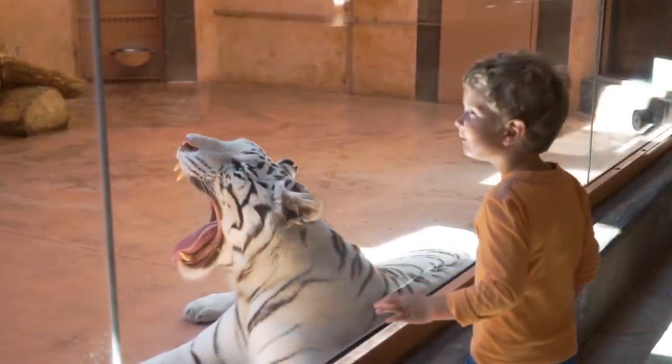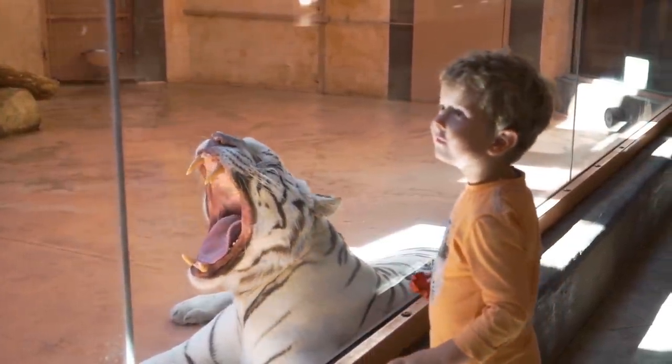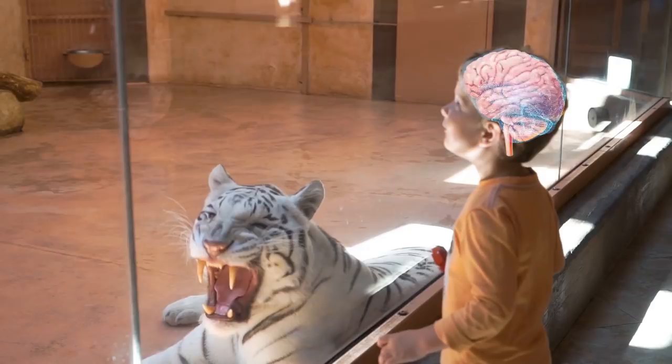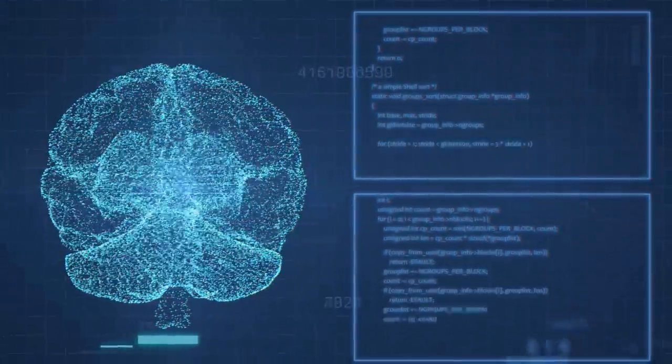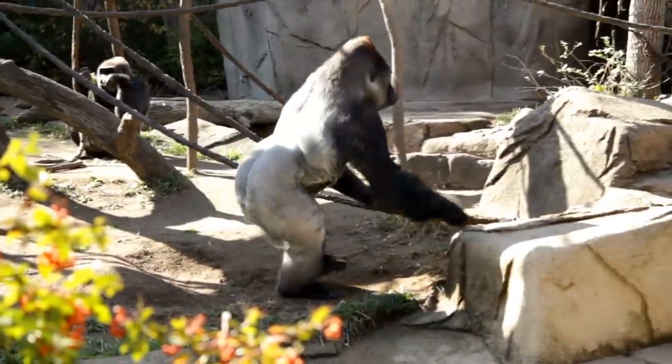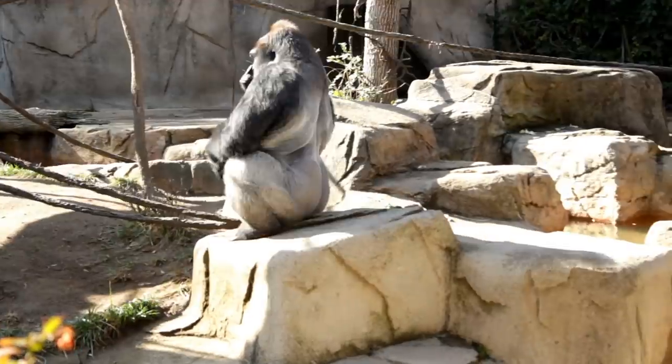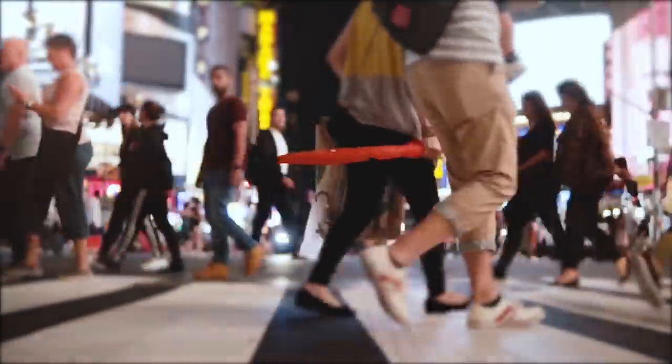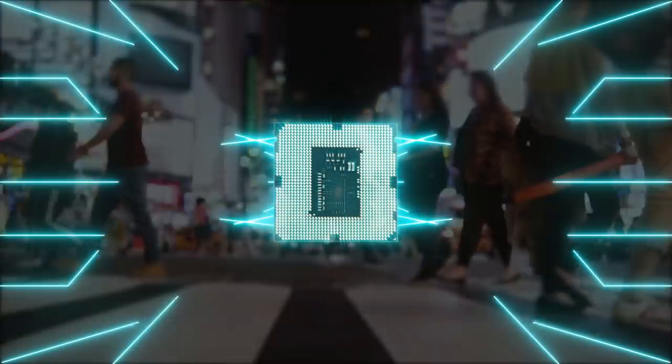The human species currently dominates other species because the human brain has some distinctive capabilities that other animals lack. If AI surpasses humanity in general intelligence and becomes super intelligent, then it can become difficult or even impossible to control. Just as the fate of the mountain gorilla depends on human goodwill, so might the fate of humanity depend on the actions of a future machine super intelligence.